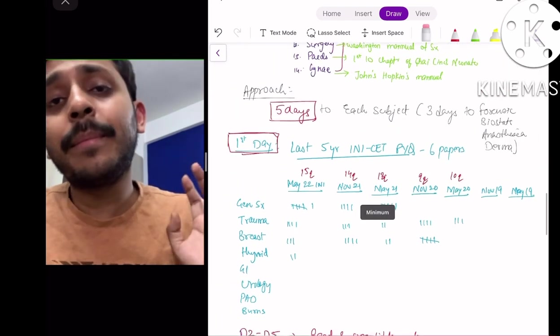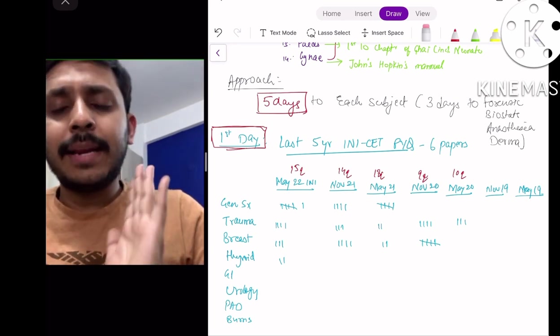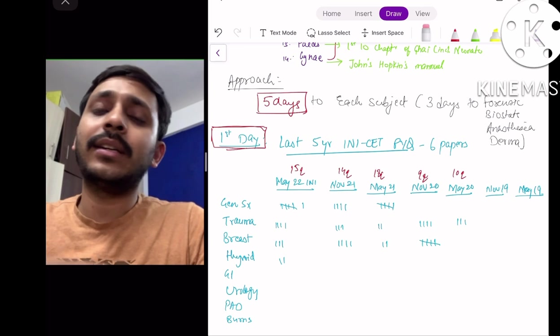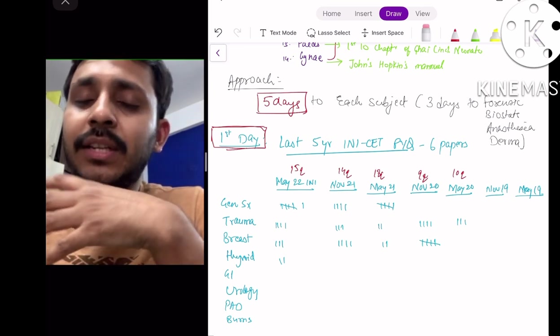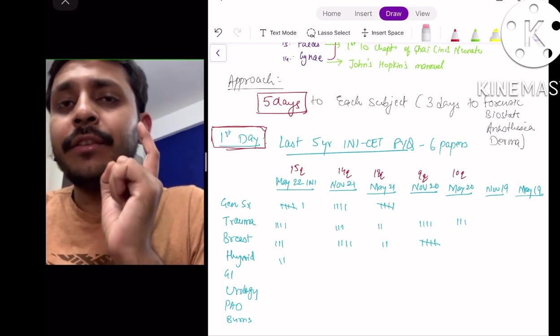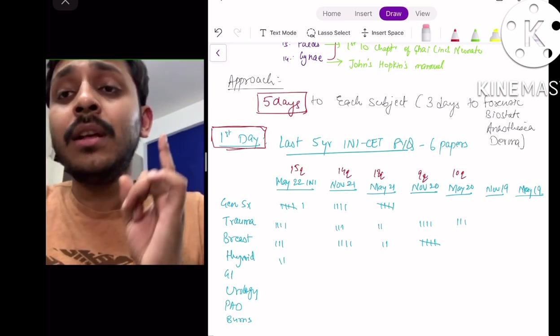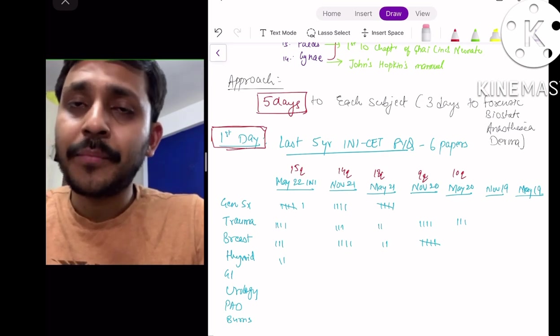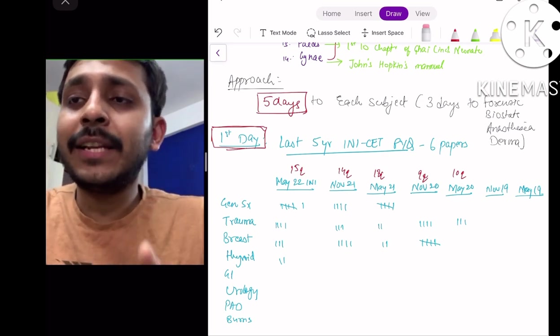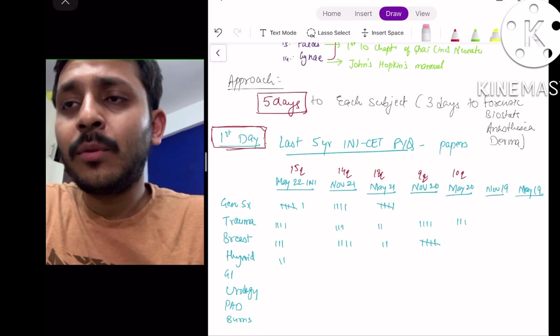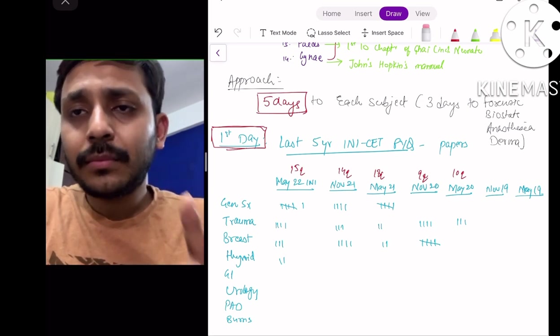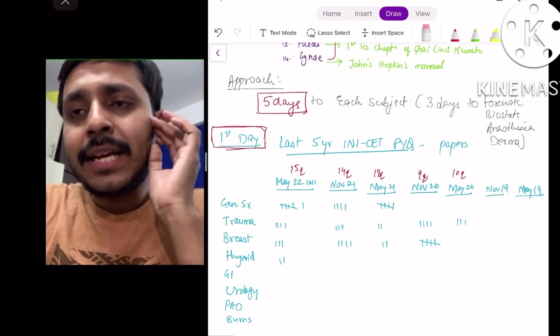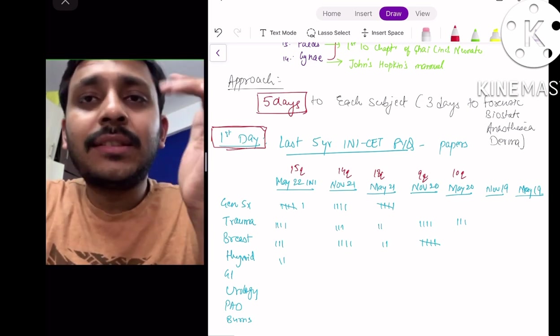Now, how to approach each subject since you only have two months? In my opinion, just give five days to each subject and you will be able to do at least 70 to 80 percent of the previous asked topics. In the first day, the first day of when you start a subject, the first day should be the most important day. In the first day, just do the previous questions of the last five years. Five years INI-CET questions come to around 10 papers.